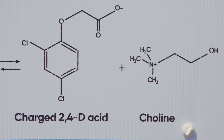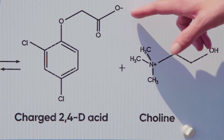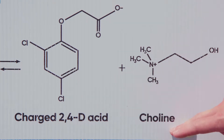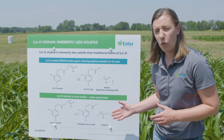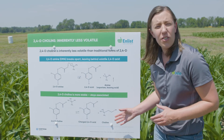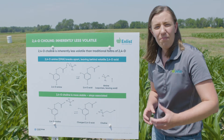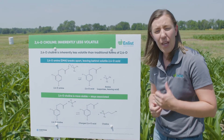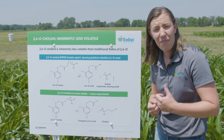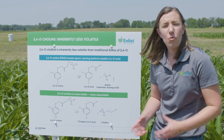2,4-D choline is formulated with choline salt. The 2,4-D acid is connected to an oppositely charged choline salt molecule. You can see the negative charge on our 2,4-D acid and the positive charge on our choline molecule. The stability of 2,4-D choline comes from the charged 2,4-D acid being connected to the oppositely charged choline particle. Choline is the salt connected to the acid, and in formulating products, we make sure the acid doesn't get loose — that's where volatility comes from.